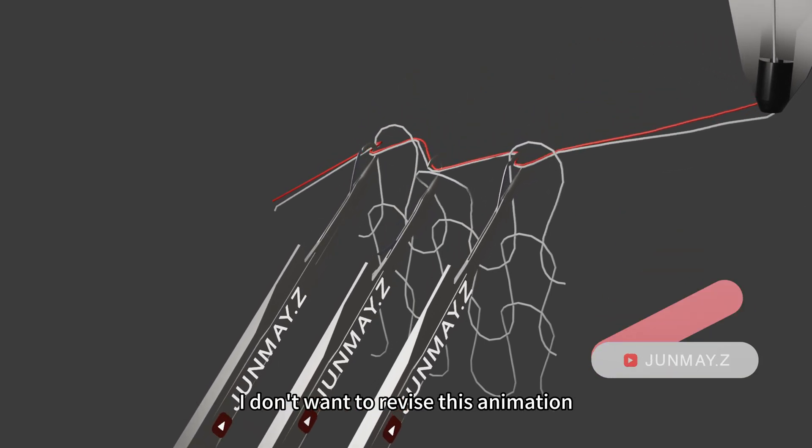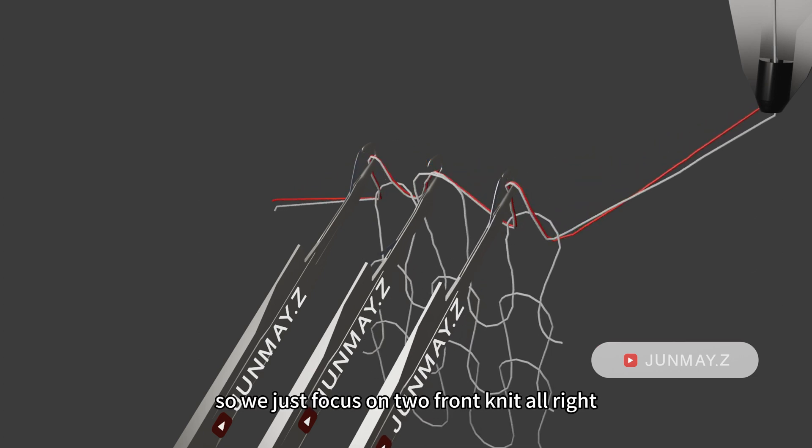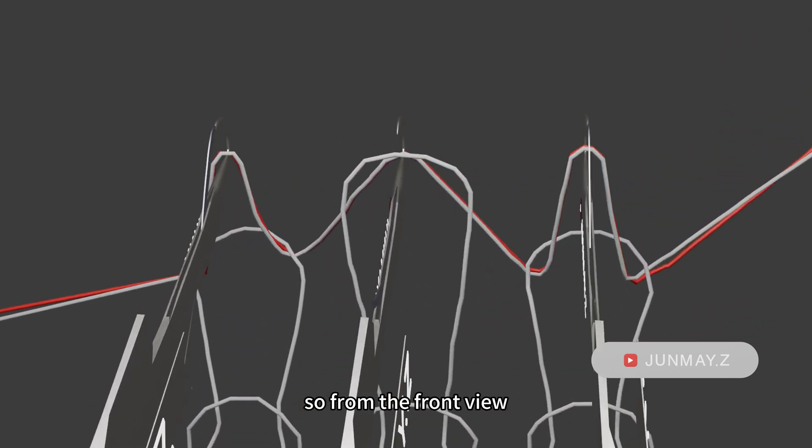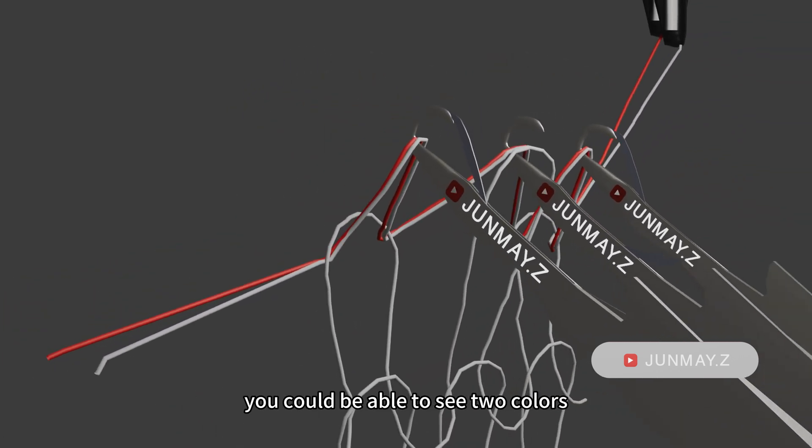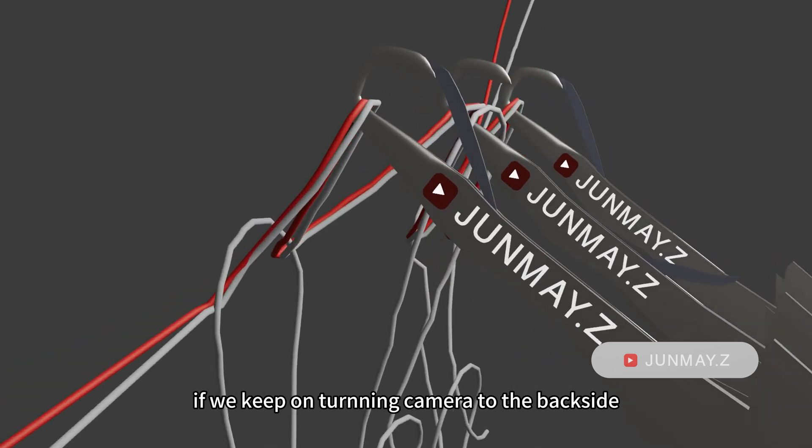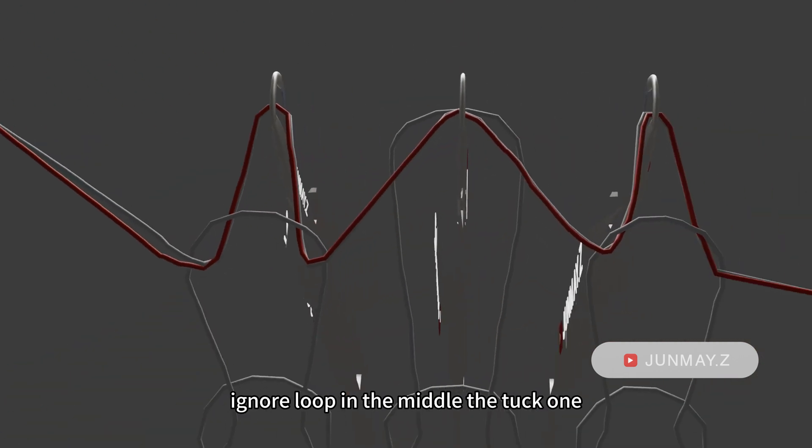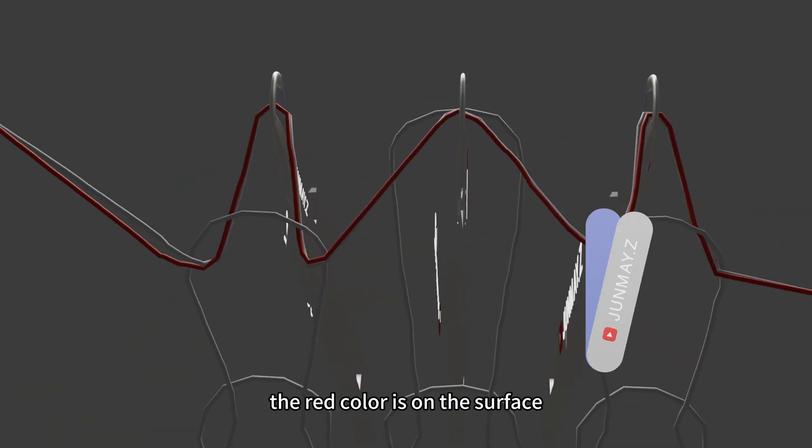I don't want to revise this animation. It takes a moment of time. So we just focus on two-fronted, alright? The number three is the same. So from the front view, you can only be able to see the white color. But if I place the lens to the side view, you could be able to see two colors. If we keep on turning the camera to the back side, ignore the loops in the middle, the tuck one. The right color is on the surface.